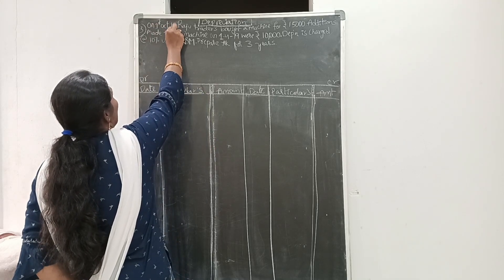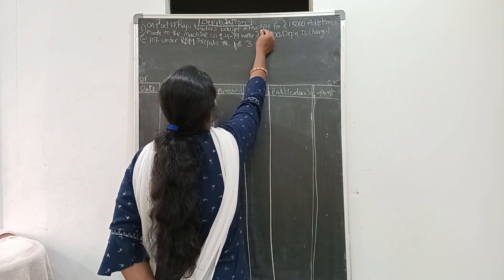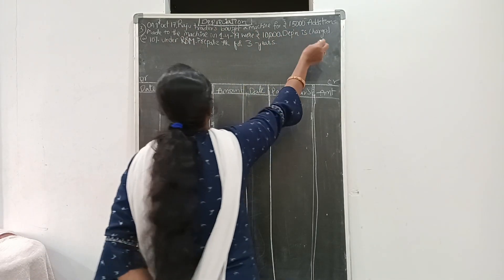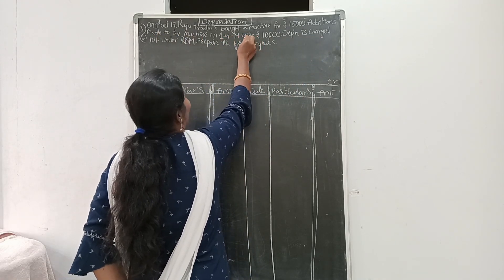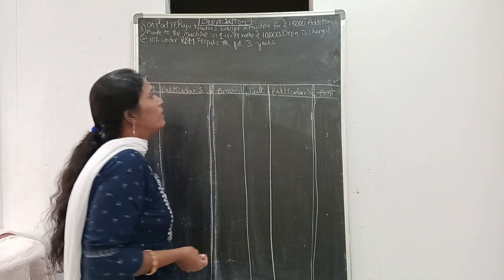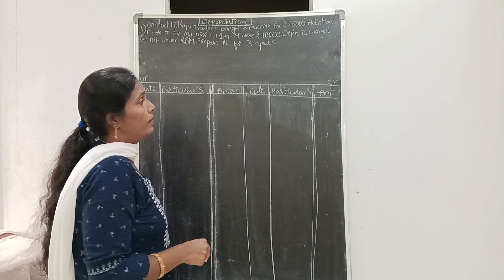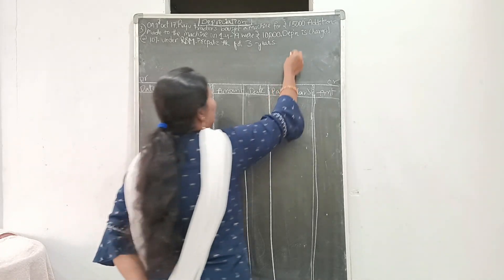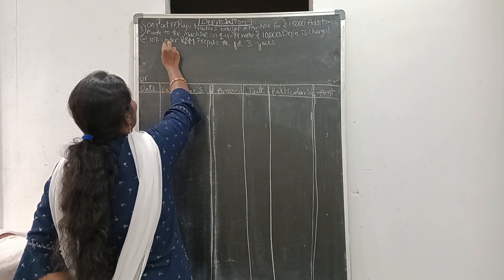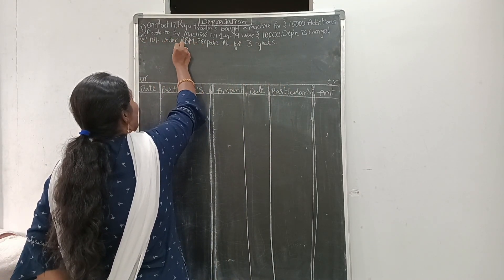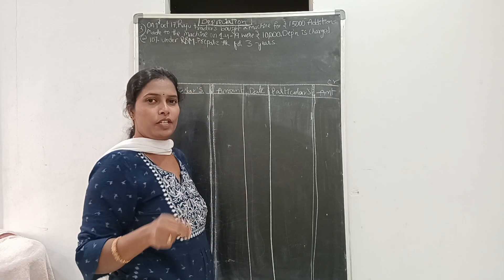On 1st October 2017, Raju Traders bought a machine for 15,000. Additions made to the machine on 1st April 2019 were 10,000. Depreciation is charged at 10% under the reducing balance method, also known as the diminishing balance method.